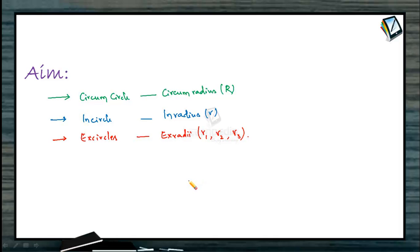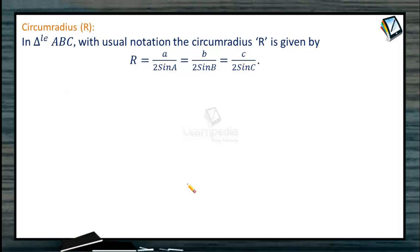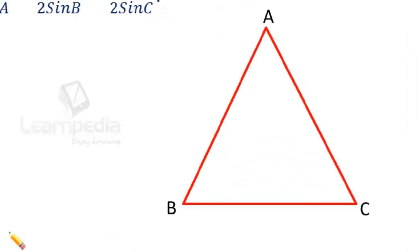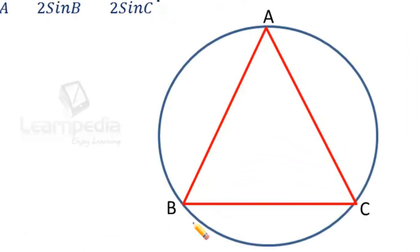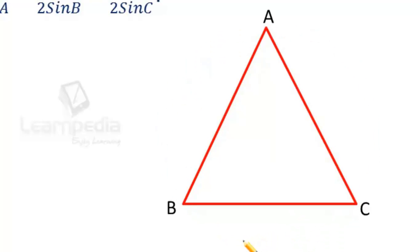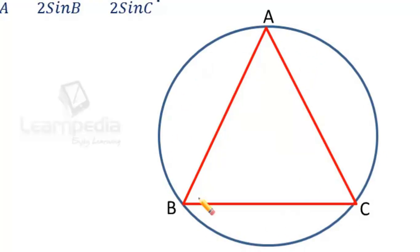Let us proceed to study about the circumradius. In triangle ABC with usual notation, the circumradius R is given by R = a / 2sinA, which is also equal to b / 2sinB, and also equal to c / 2sinC. For a triangle ABC, the circle which passes through all three vertices is called the circumcircle, and the radius of this circle is called the circumradius.